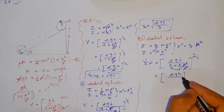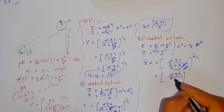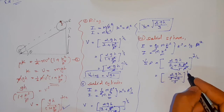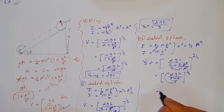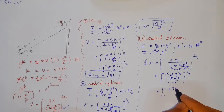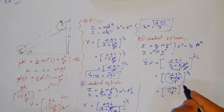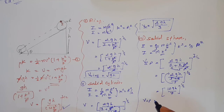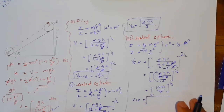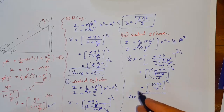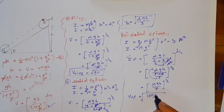Continuing for the solid sphere: v = √(2gh / (1 + 2/5)) = √(2gh × 5/7) = √(10gh/7). So v_solid sphere = √(10gh/7).